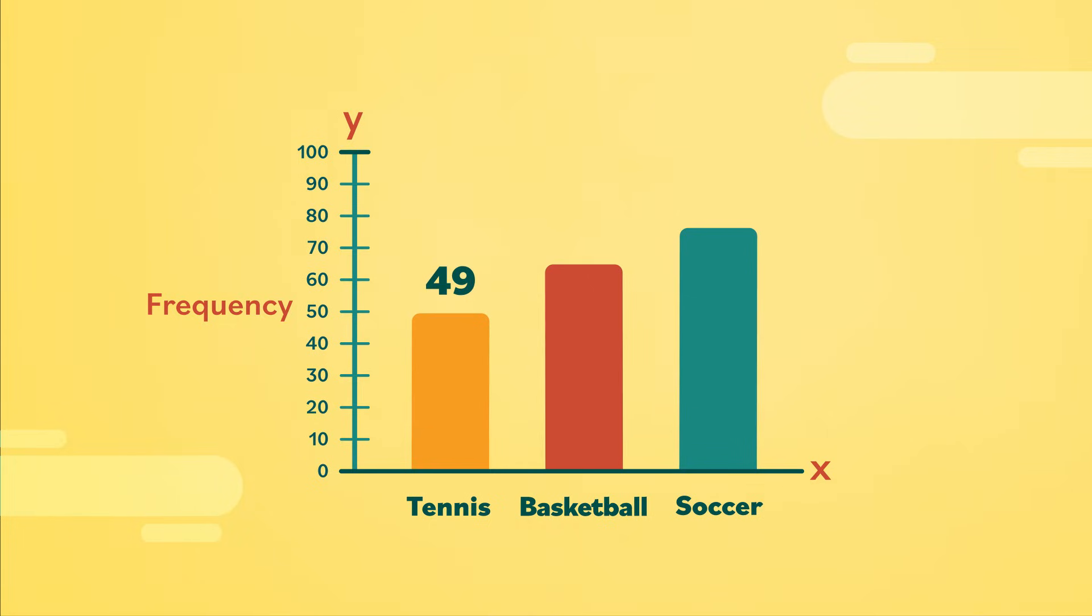Remember, qualitative variables are categories that can only be expressed in words. Then there's the vertical, or y-axis, representing values that determine the height of each bar. The numbers on the y-axis reflect frequency, or the number of times something occurs.